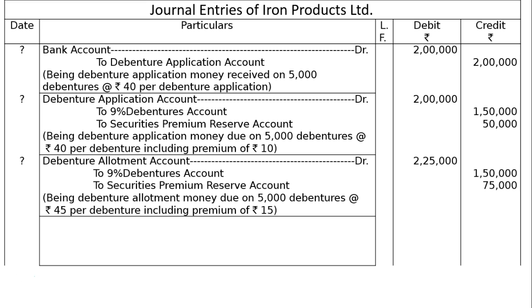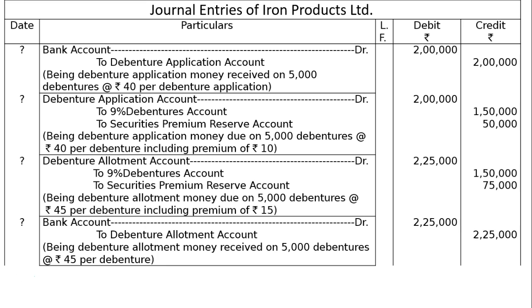Fourth entry: Bank Account debited to Debenture Allotment Account, Rs.2,25,000 each. Being debenture allotment money received on 5,000 debentures at the rate of Rs.45 per debenture.